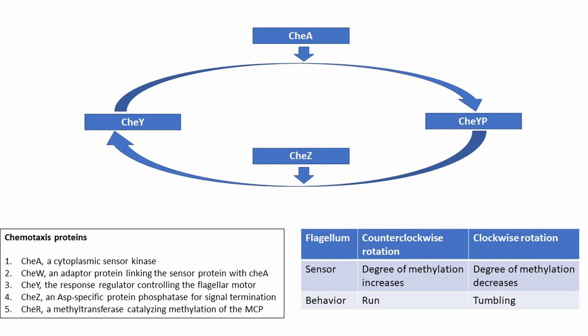The chemotaxis proteins involved in the signaling are: CheA — the cytoplasmic sensor kinase; CheW — the adapter protein linking the receptor with CheA; CheY — the response regulator controlling the flagellar motor; CheZ — an aspartate-specific protein phosphatase for signal termination; and CheR — the methyltransferase catalyzing the methylation of MCP.